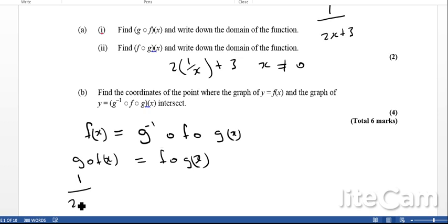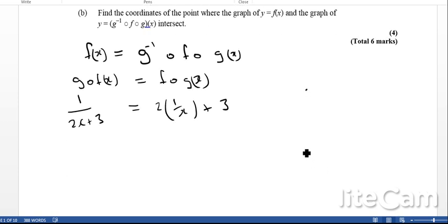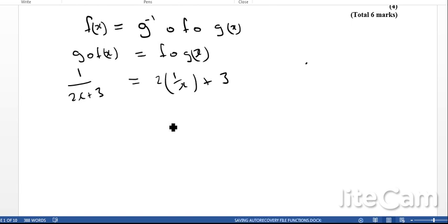So I've now basically got 1 over 2x plus 3 must be equal to, that's what I had before, 2 times 1 over x plus 3. Once I've got that, I can basically rearrange and simplify. I should, if I rearrange correctly, end up with something like this, 6x squared plus 12x plus 6 is equal to 0. Then from that, I basically either take out a factor of 6 and factorize or use a quadratic formula. My solution I'm going to get is x equals minus 1 and y equals 1.